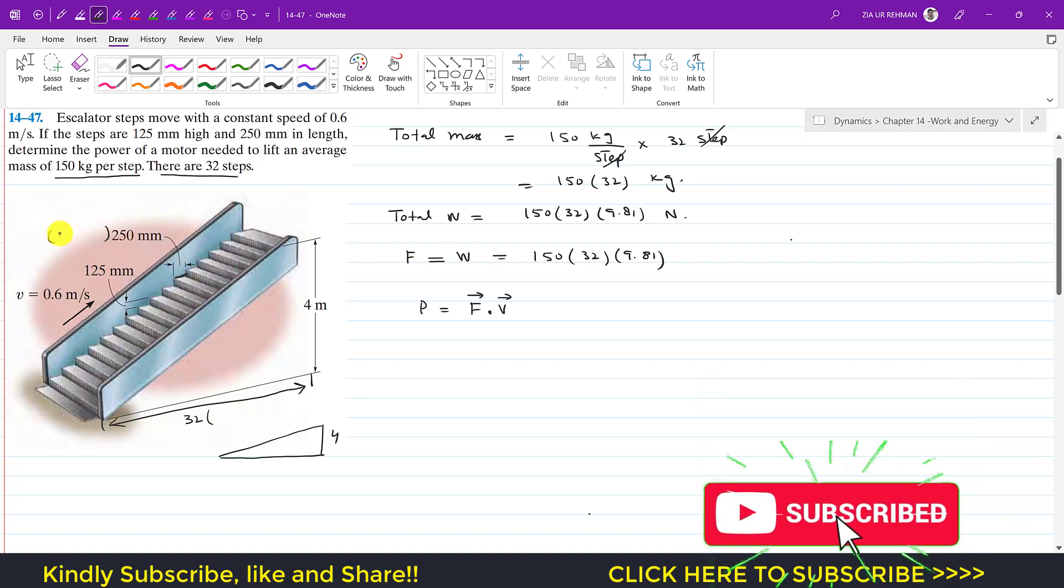In meters this is 0.25 meters. If I multiply 32 with 0.25, this will give us 8 meters. So the horizontal length of these 32 steps is equal to 8 meters. So I can write that this is 8 meters.